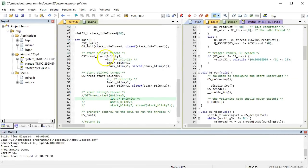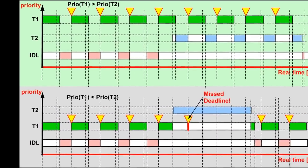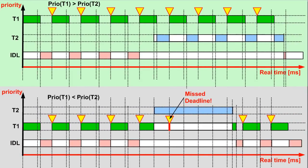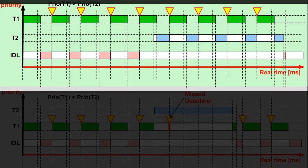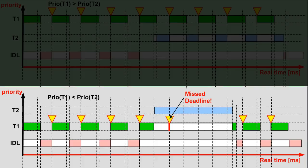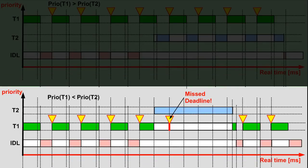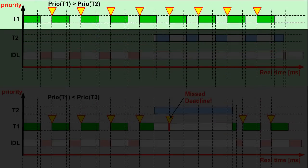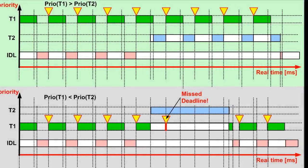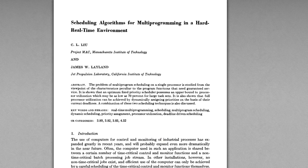With the code working as expected, let's focus on the most important decision when working with the priority-based scheduler: how to assign priorities to your threads. With just two threads like Blinky1 and Blinky2, you have only two possibilities. As you just saw, assigning higher priority to Blinky1 meets both real-time deadlines, while assigning lower priority to Blinky1 leads to it missing its deadline as soon as Blinky2 becomes ready. The rule that emerges is to assign higher priorities to threads with shorter periods, which means also shorter deadlines. It turns out that this rule was discovered already in the 1970s.